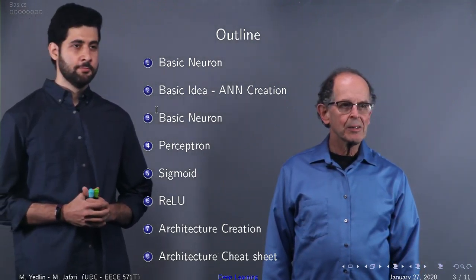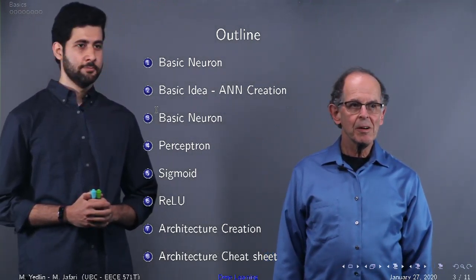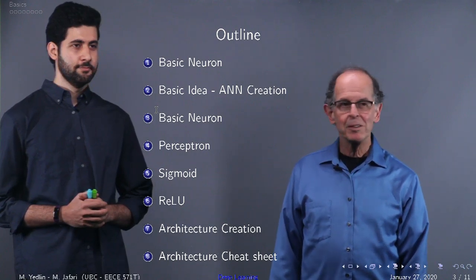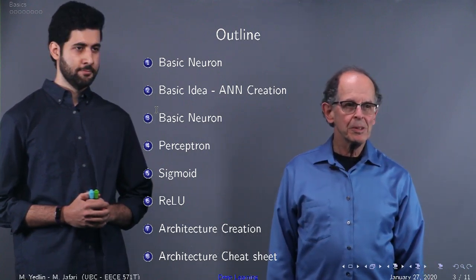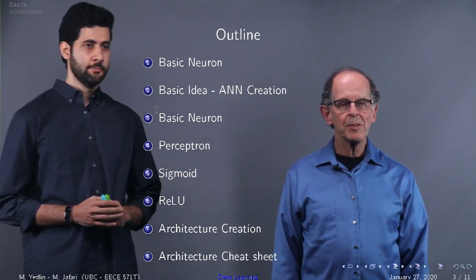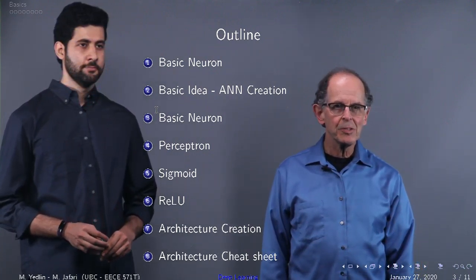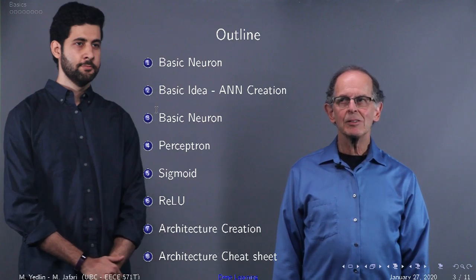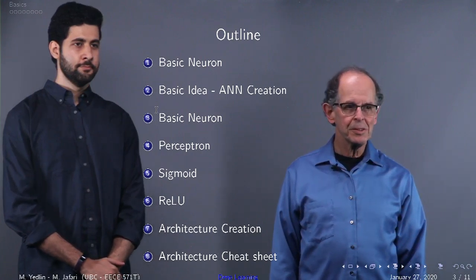Here's the outline of our talk. We're going to look at basic neurons, the idea of an artificial neural network, return to the basic neuron, introduce the perceptron with three different activation functions, and then extend the architecture to more complicated neural networks.